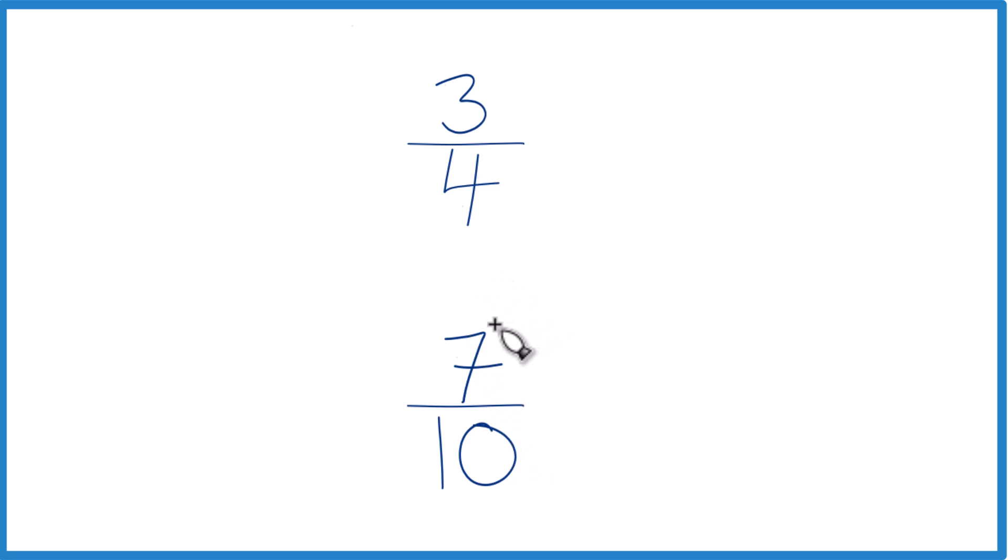You could also find a common denominator, something that 10 and 4 go into evenly. Because if we have the same denominator, we just compare the numerators.